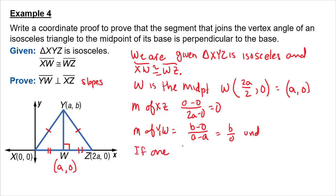Hopefully you realize if one slope is 0 and the other is undefined, you'll find the lines are perpendicular. So therefore, YW is perpendicular to XZ.